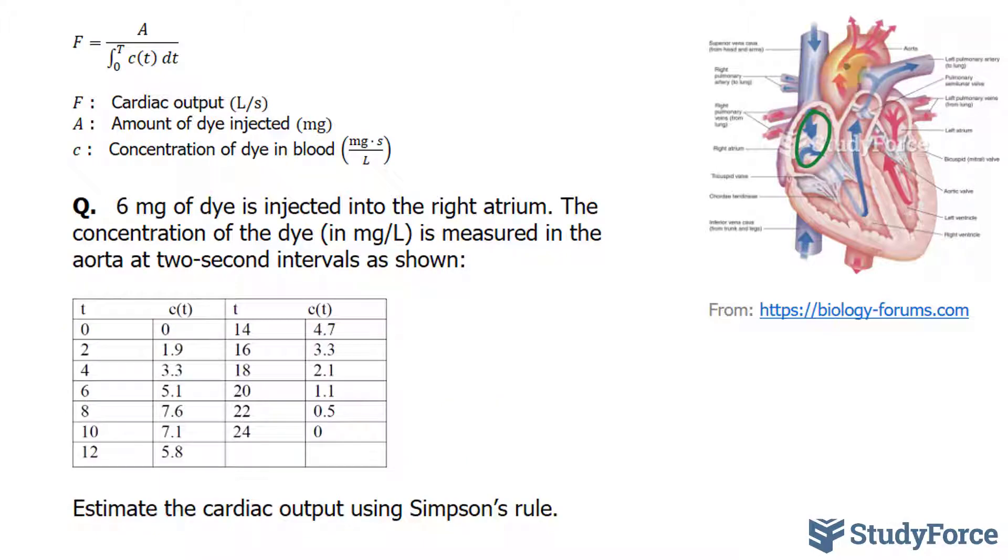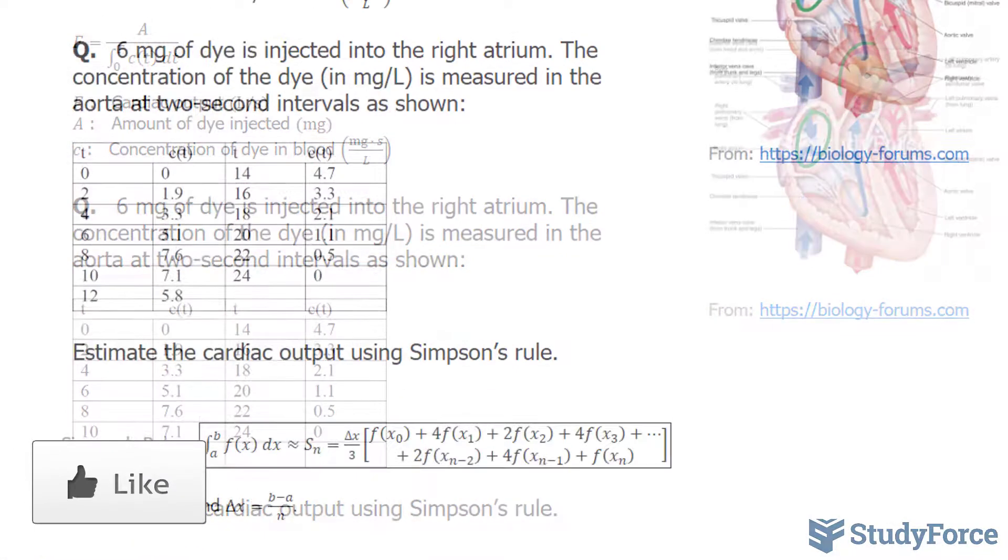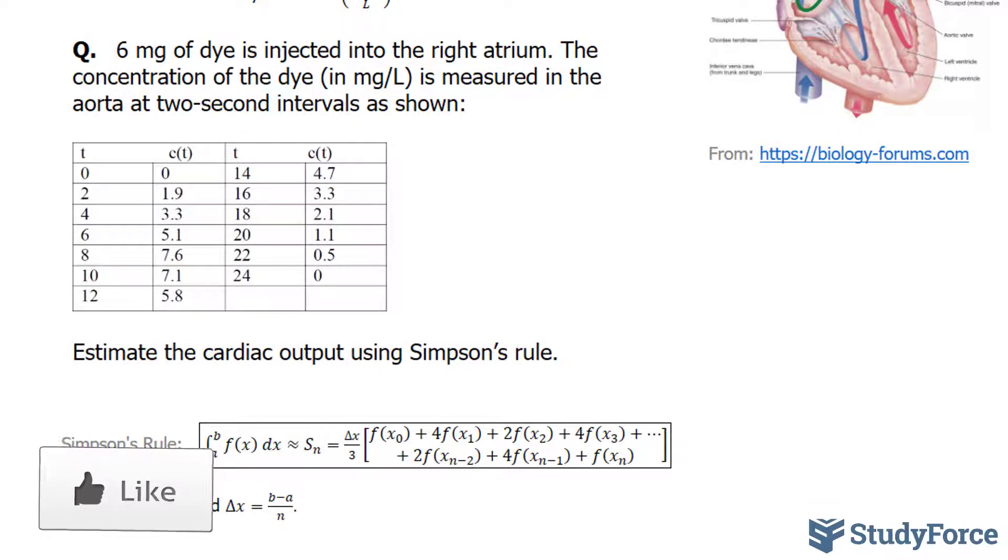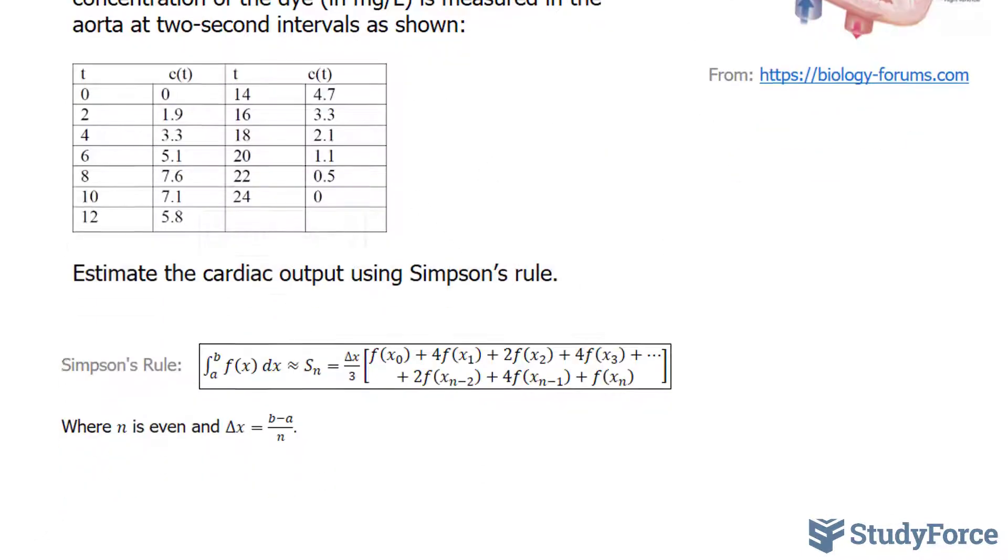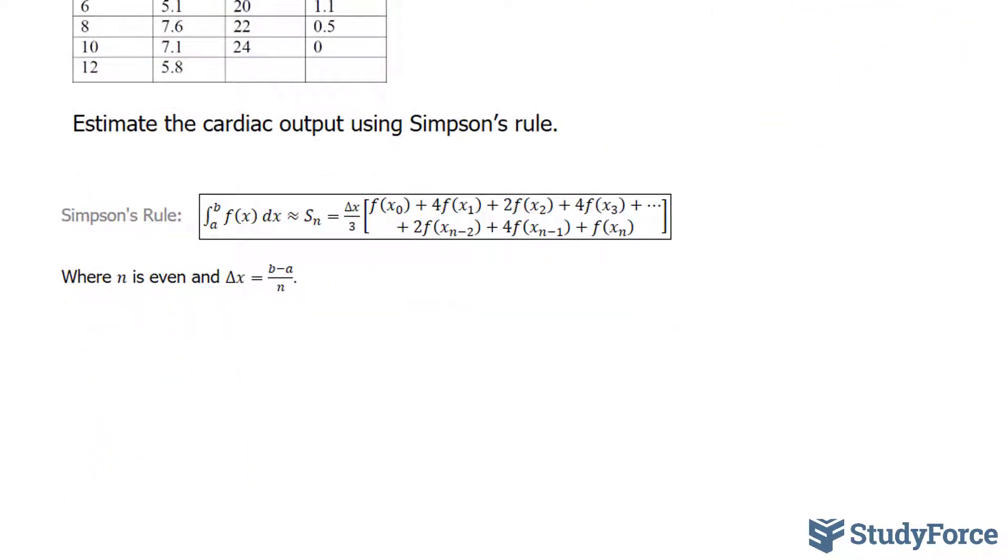The aorta is this part of the heart right here. We have to estimate the cardiac output using Simpson's rule, which is shown right here. In case you're not familiar with this rule, this is a technique for approximating the definite integral of a function using parabolas.